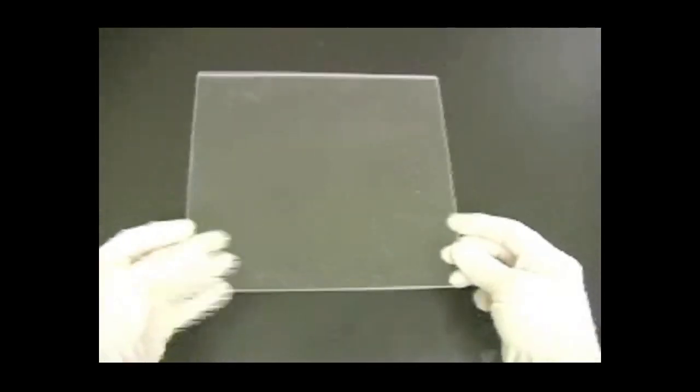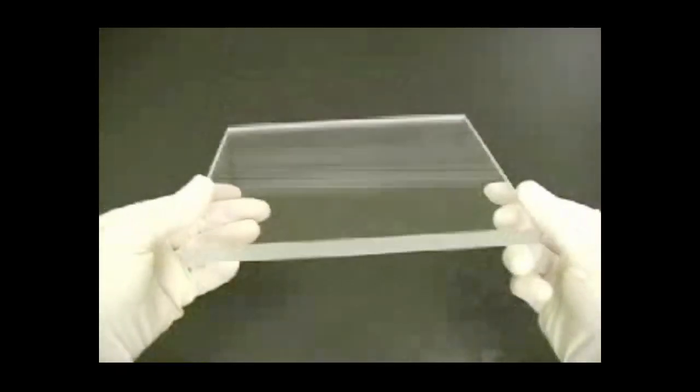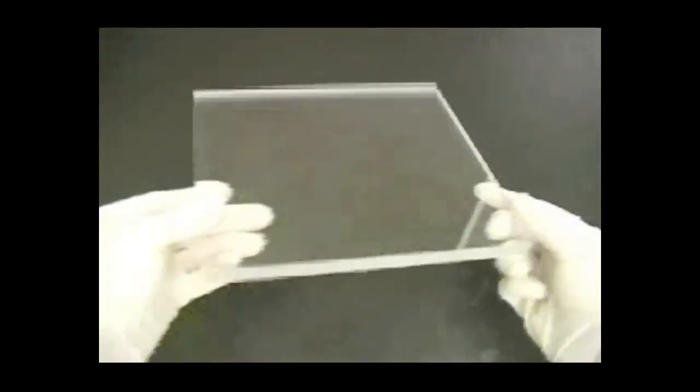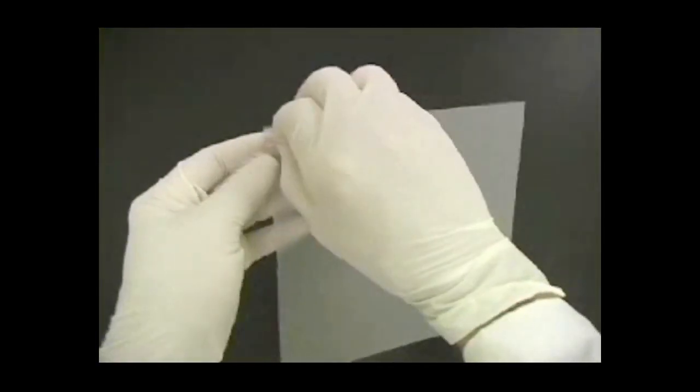There are a number of components needed for the assembly of the Protein II multicasting chamber: acrylic blocks of different thicknesses to fill the chamber when casting less than 12 gels, and separation sheets to separate the gel sandwiches from each other.